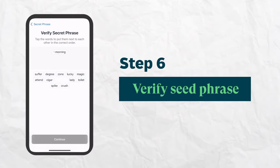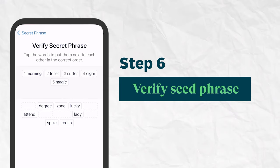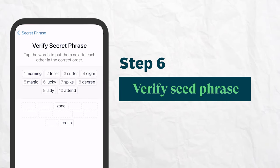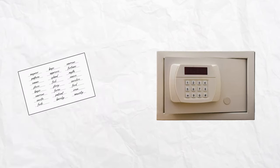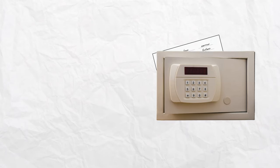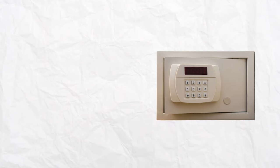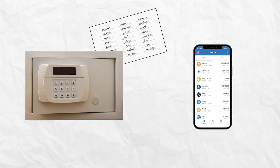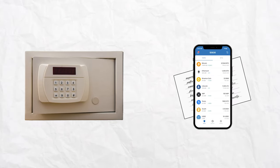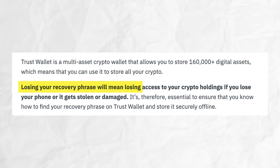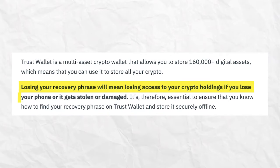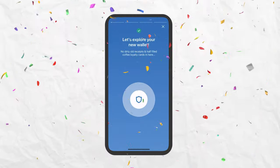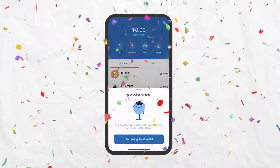In the next screen, you'll be asked to verify that you've noted down your secret phrase by arranging them in the correct order. You should always make sure to keep your recovery phrase in a safe place, as this is the only way to access your wallet and your funds should you lose access to your device or forget your password. And voila — you've just completed your wallet setup.